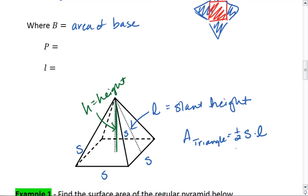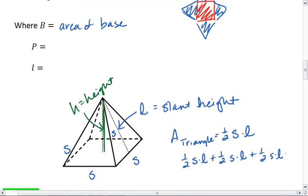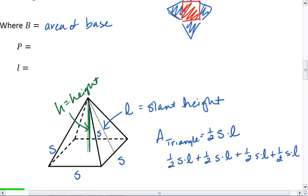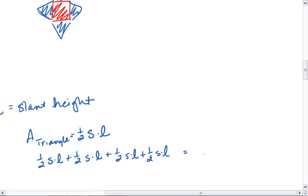So I'm going to get 1 half s times the slant height, plus 1 half s times the slant height, plus 1 half s times the slant height, plus 1 half s times the slant height. For this case, that's four times 1 half s times the slant height.